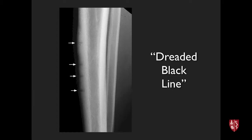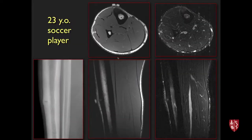Radiographs demonstrated the dreaded black line — transverse lucencies across the cortex of the anterior tibia, with four of them present. This is a partial fracture of the anterior tibial cortex, sometimes associated with recurvatum deformity causing tensile stress. These fractures tend not to heal spontaneously, filling with granulation or fibrous tissue, and put the patient at risk for a higher-grade complete fracture. On MRI, intracortical signal on T1 and intermediate-gray STIR signal in the normally black cortex confirms the injury.